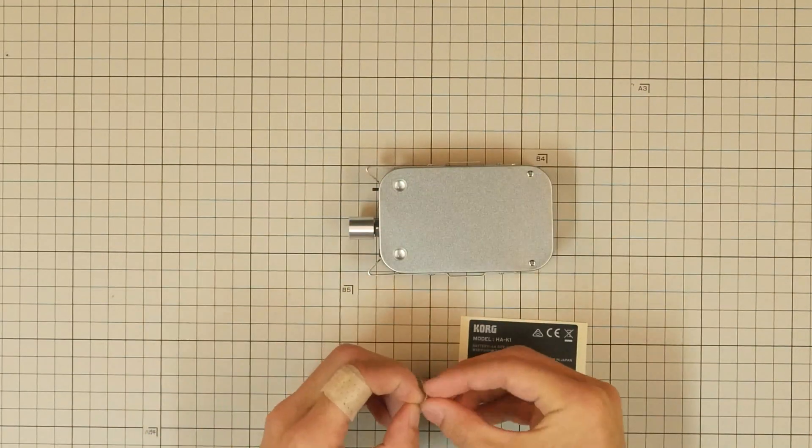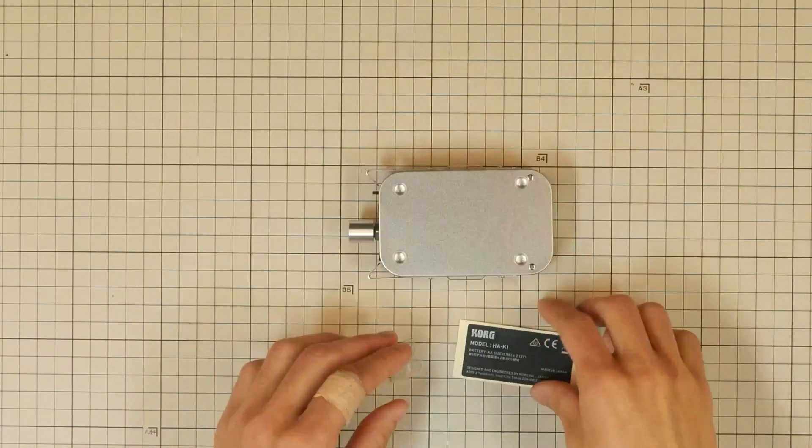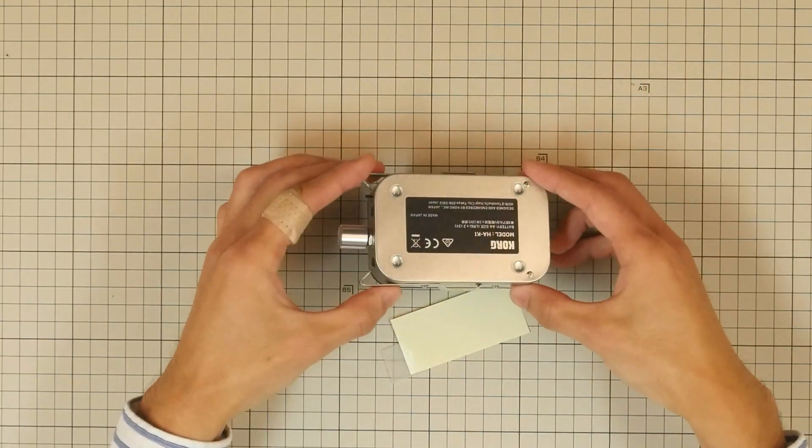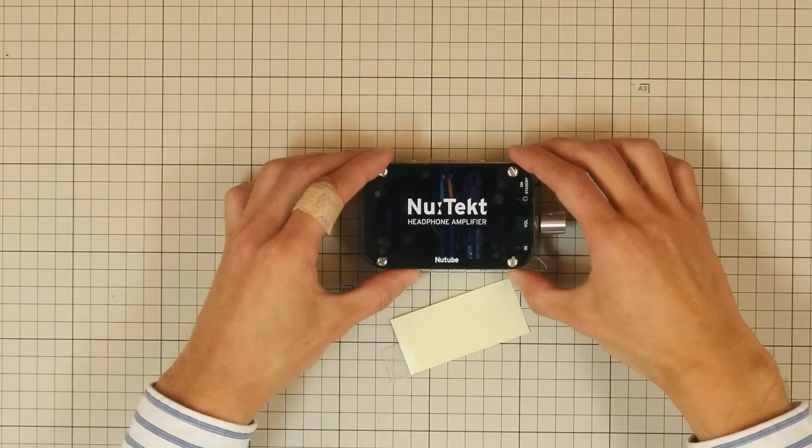Lastly, attach the rubber feet and rating label onto the bottom of the case. Make sure not to cover up the screws or cover up the label with the feet. And we're done!